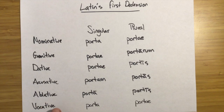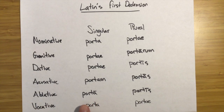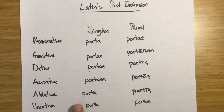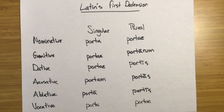Ablative is generally instrument or used with a preposition. So if you were to say 'with a door,' it would be cum porta, or cum portis would be 'with doors.' And then the vocative — if you were calling out to a door it would be porta, maybe with an exclamation mark, and then portae in the plural.